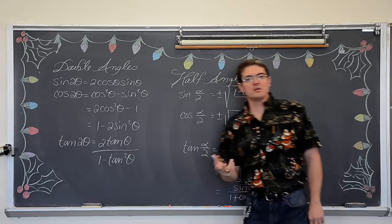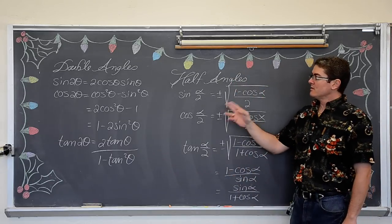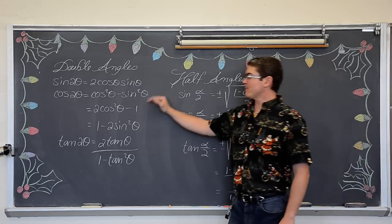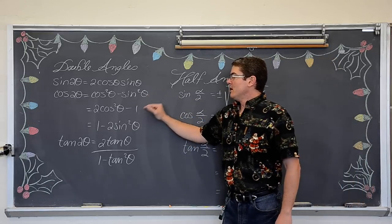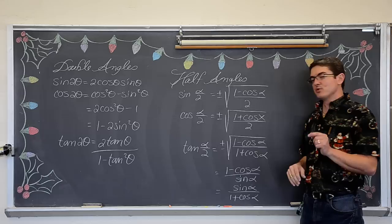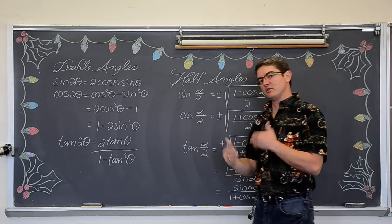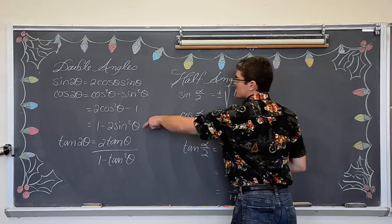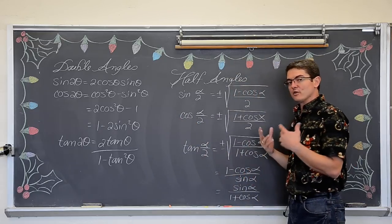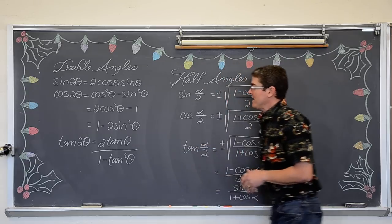However, in subsequent videos we are going to start doing trig proofs involving double angle and half angle identities. When you are doing a proof, choosing the right one of these identities is going to be crucial, so you want to avoid picking arbitrarily until you absolutely know which one is going to best suit the proof you are working on — your verifying of an identity. We also have a double angle identity for tangent.